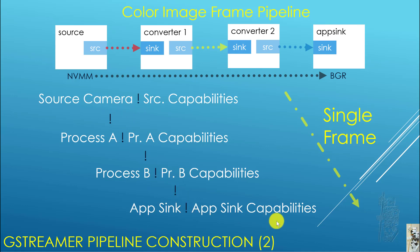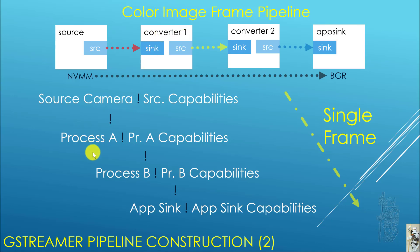To realize this into C code that your OpenCV code can understand and Linux Tegra can set on its hardware, you have to figure out a bunch of little strings connected together with the exclamation character. For each element — element one, two, three, and four of the pipeline — you have to define what that process is and what are the capabilities of that process. So for four elements, there are eight little strings that we need to specify.